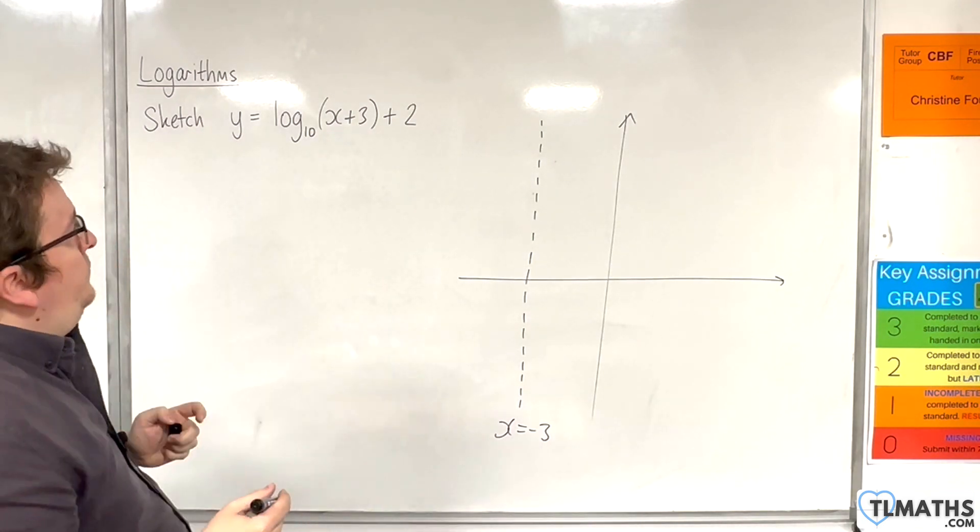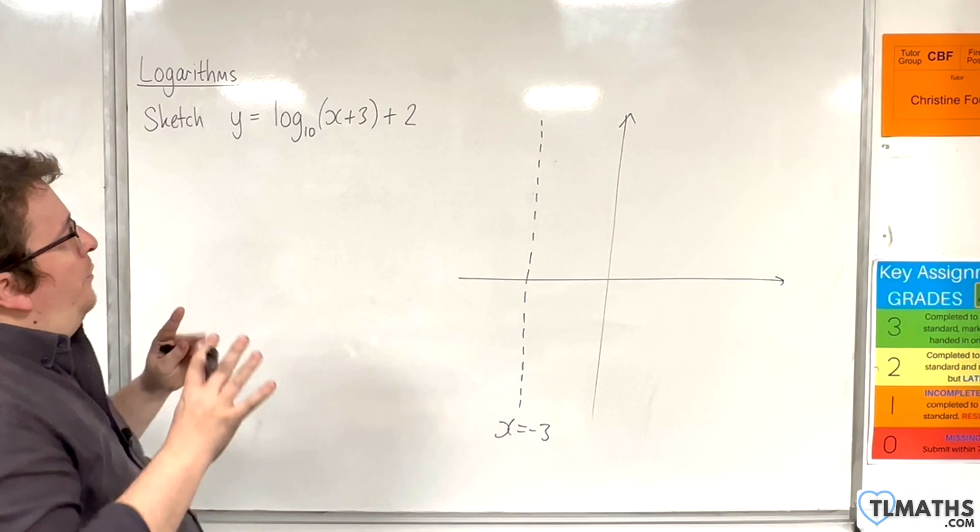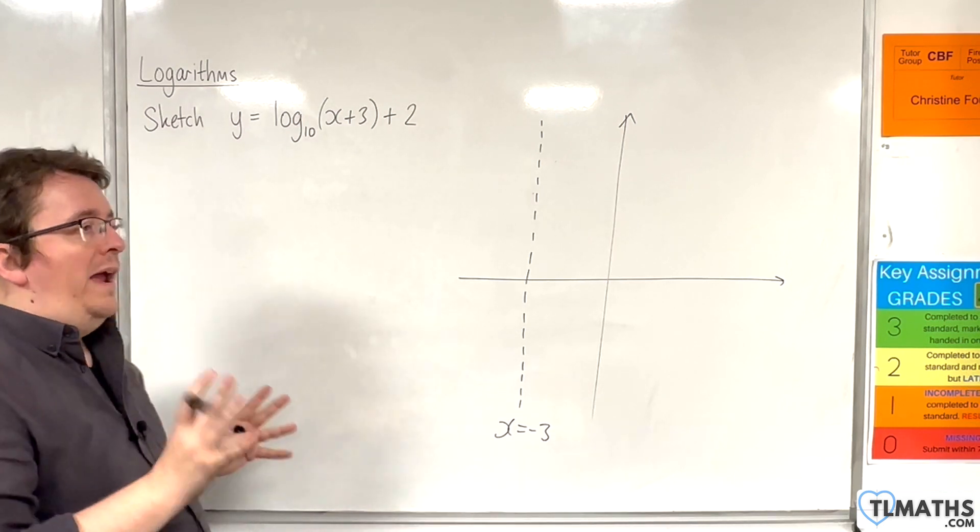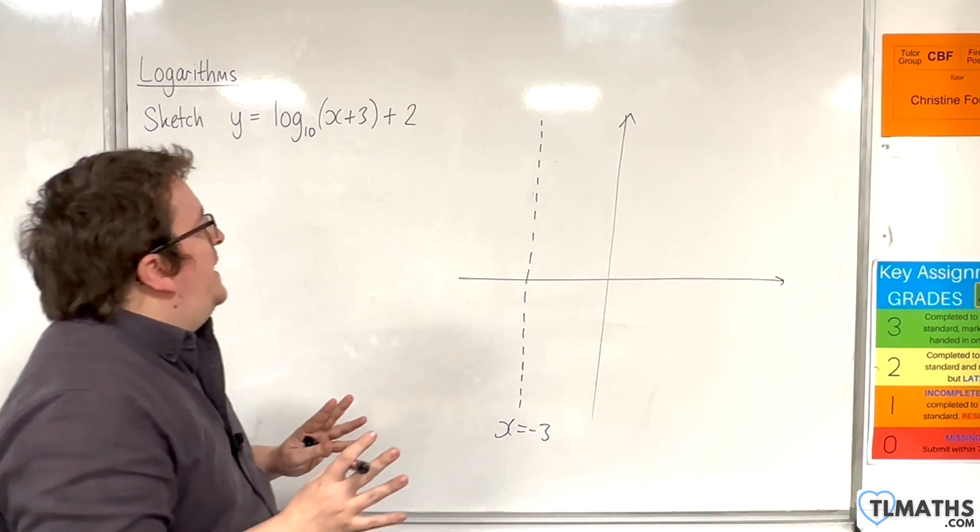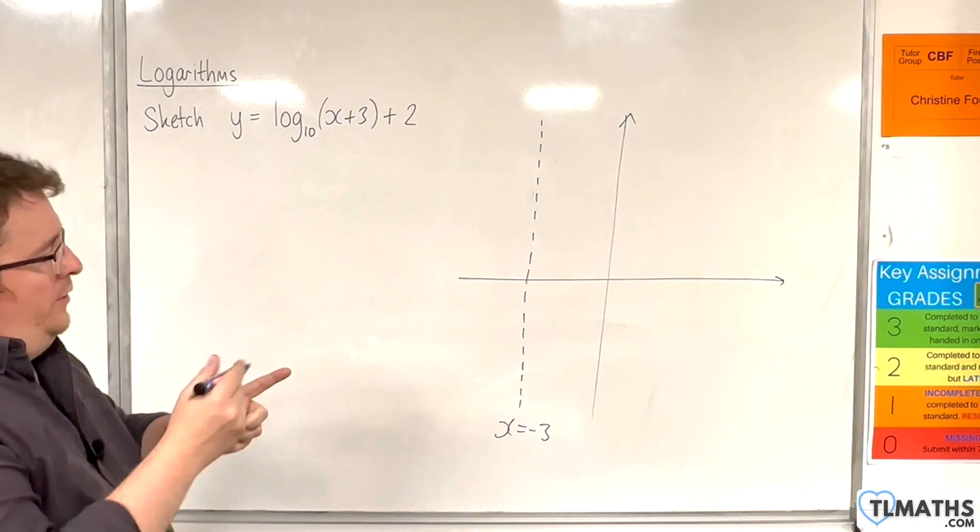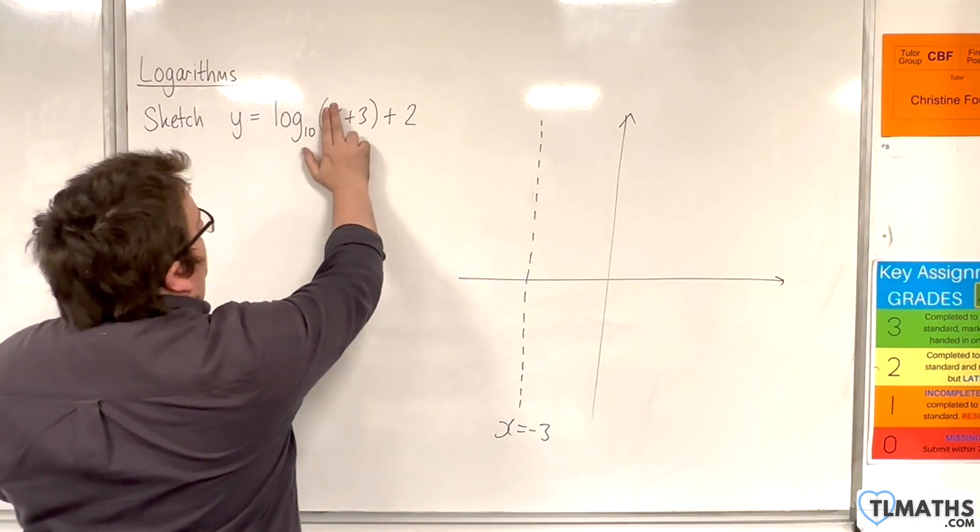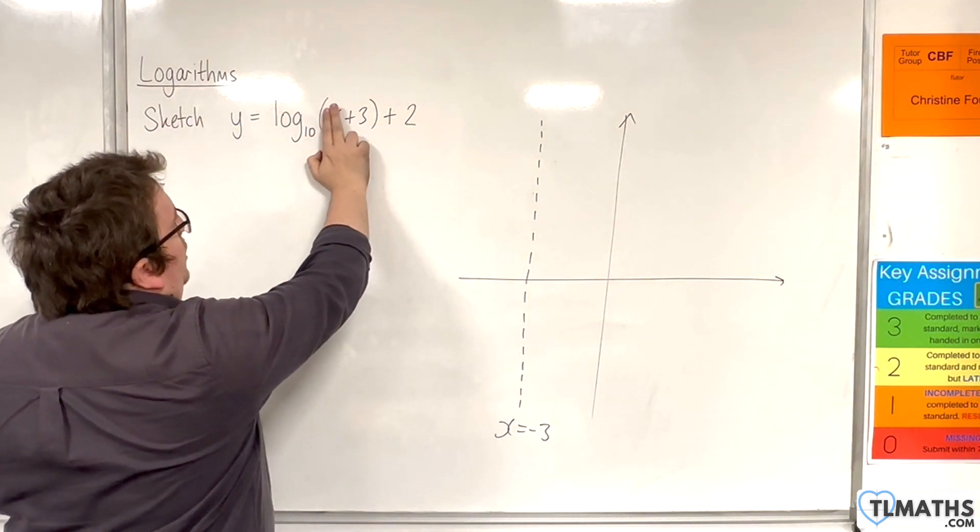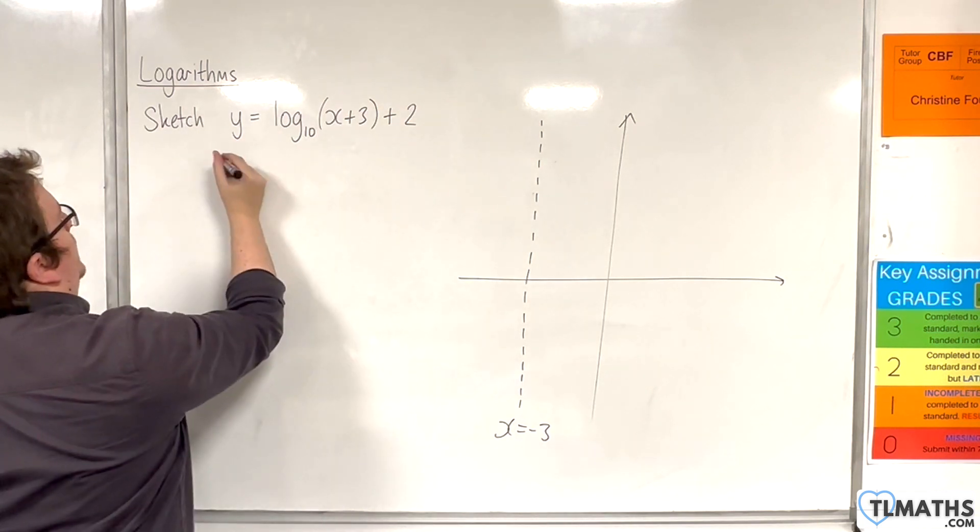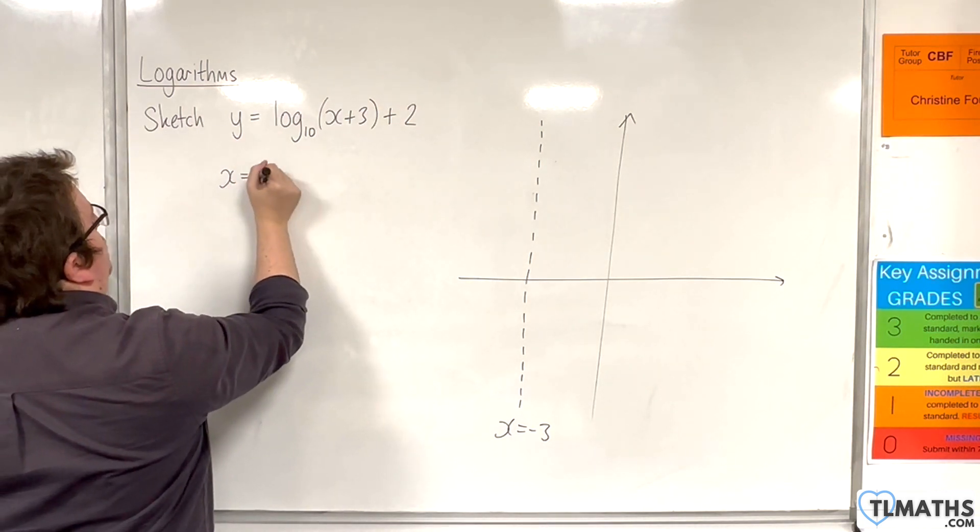So next up, we want to determine where it crosses the y-axis. So if we put x is 0, we're going to have log base 10 of 3 plus 2.